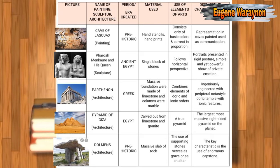And the last one is Dolmens, an architecture of the prehistoric era. It is a massive slab of rock where supporting stones serve as a grave or as an altar. The key characteristic is the use of an enormous capstone.